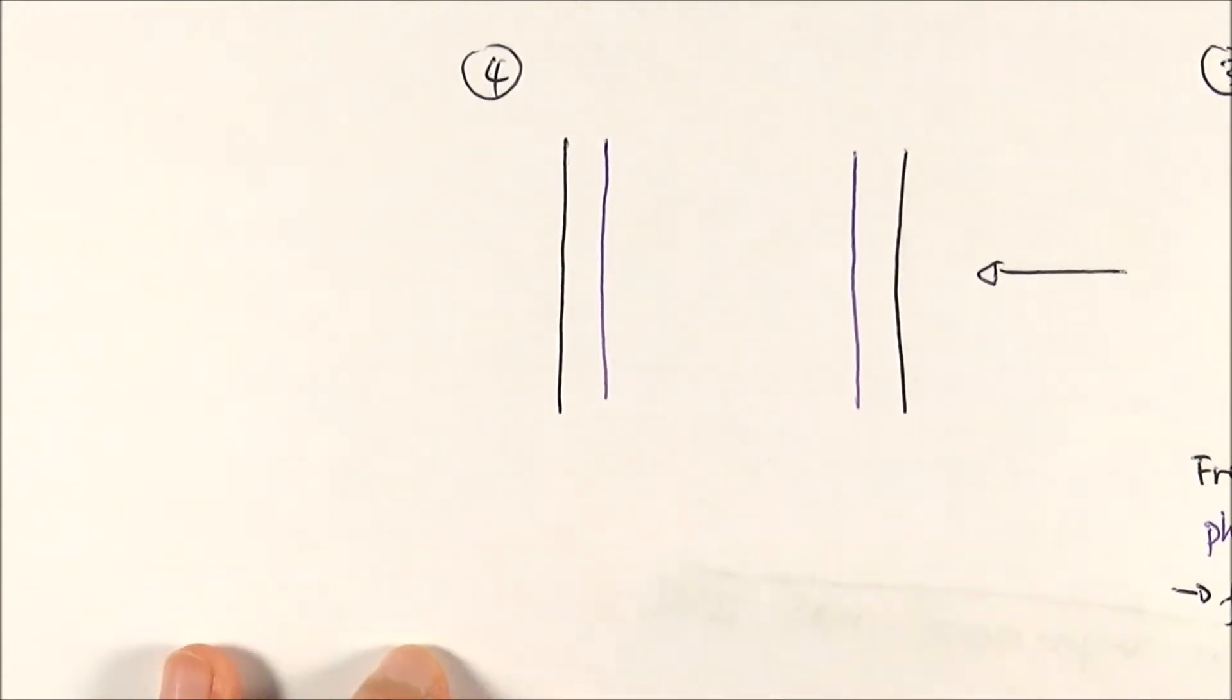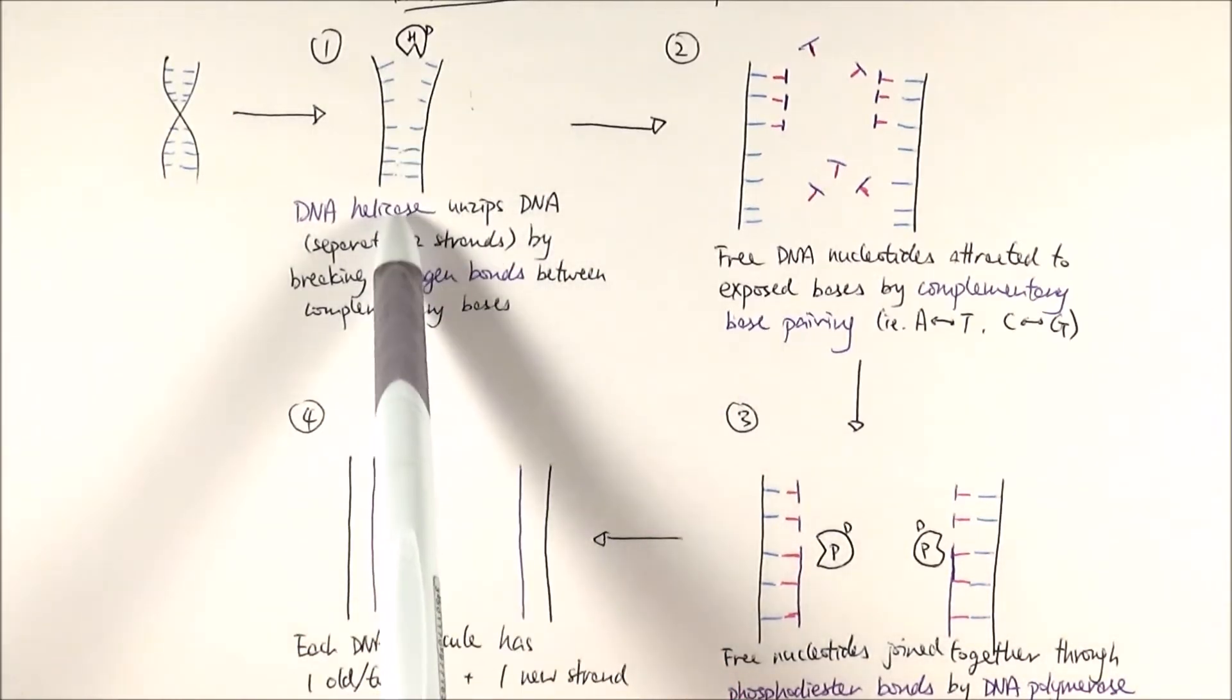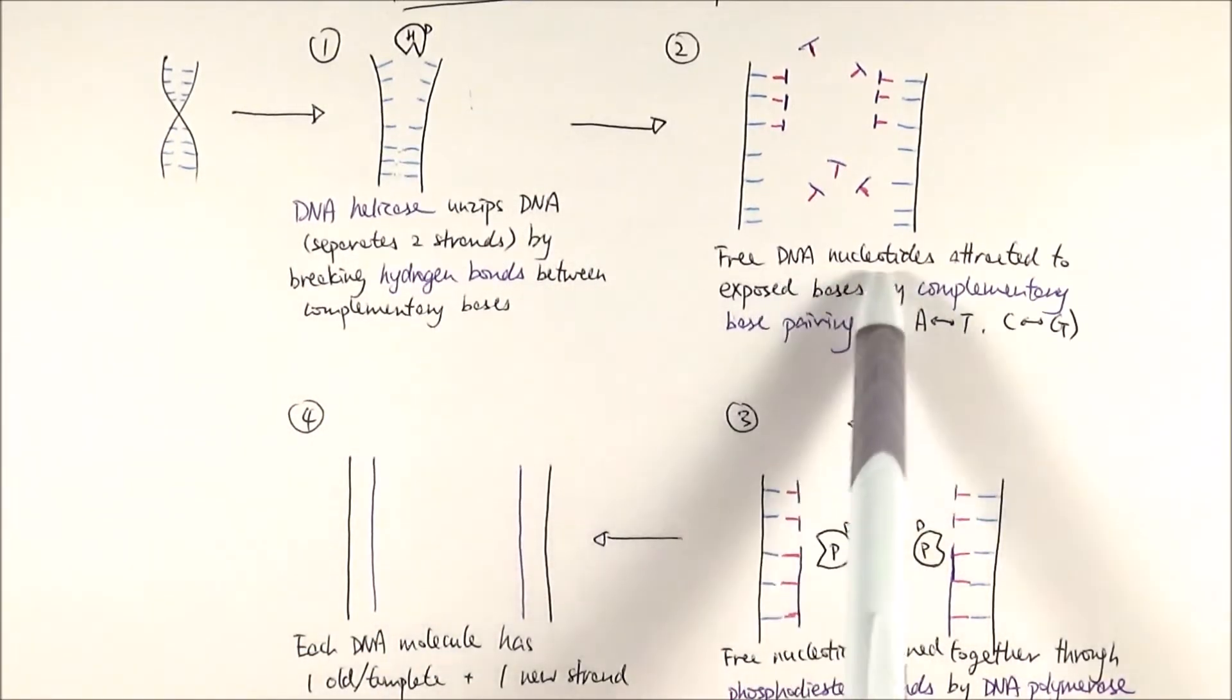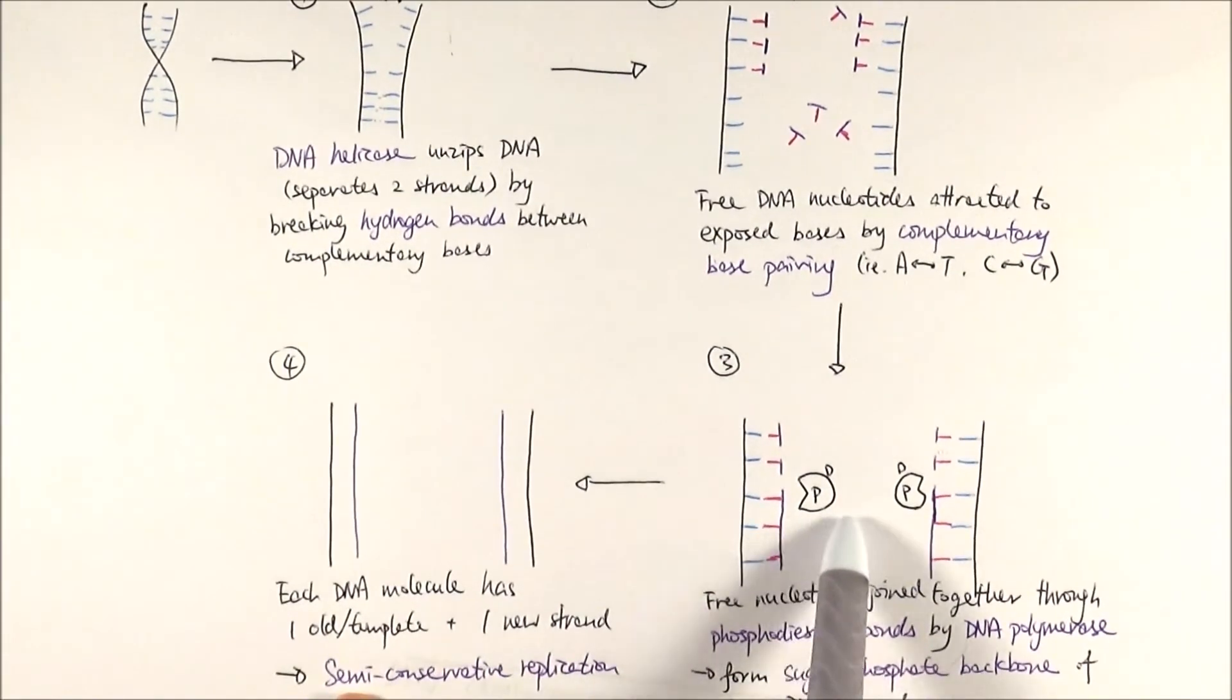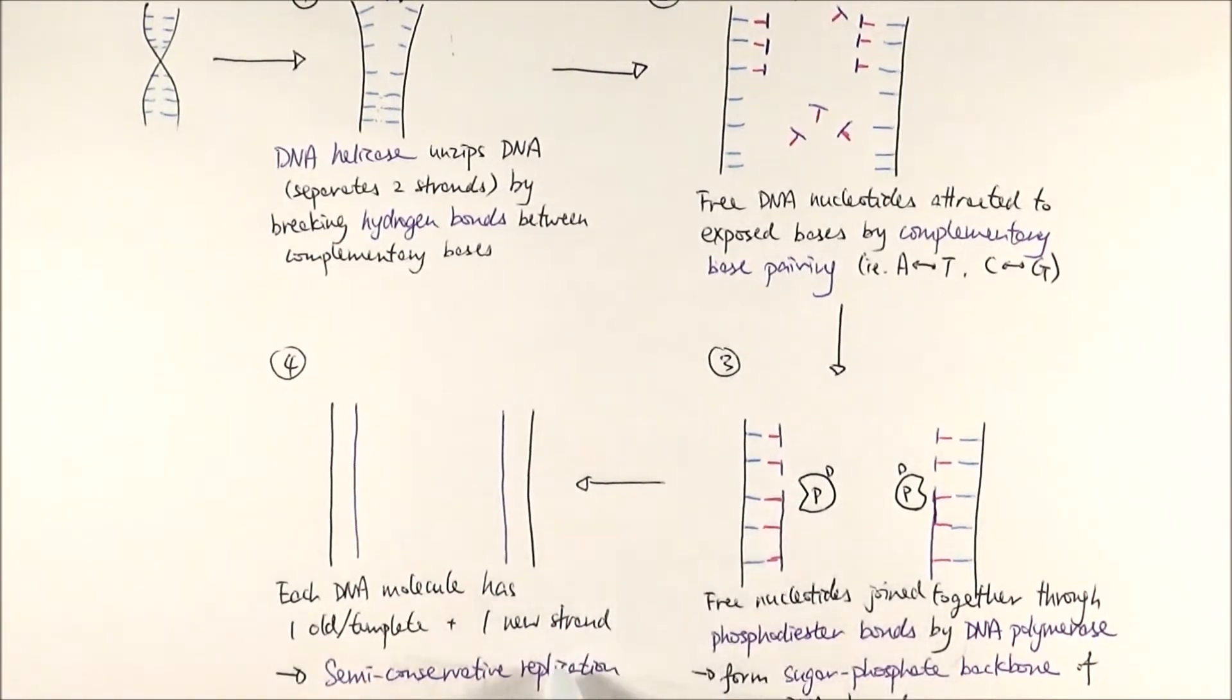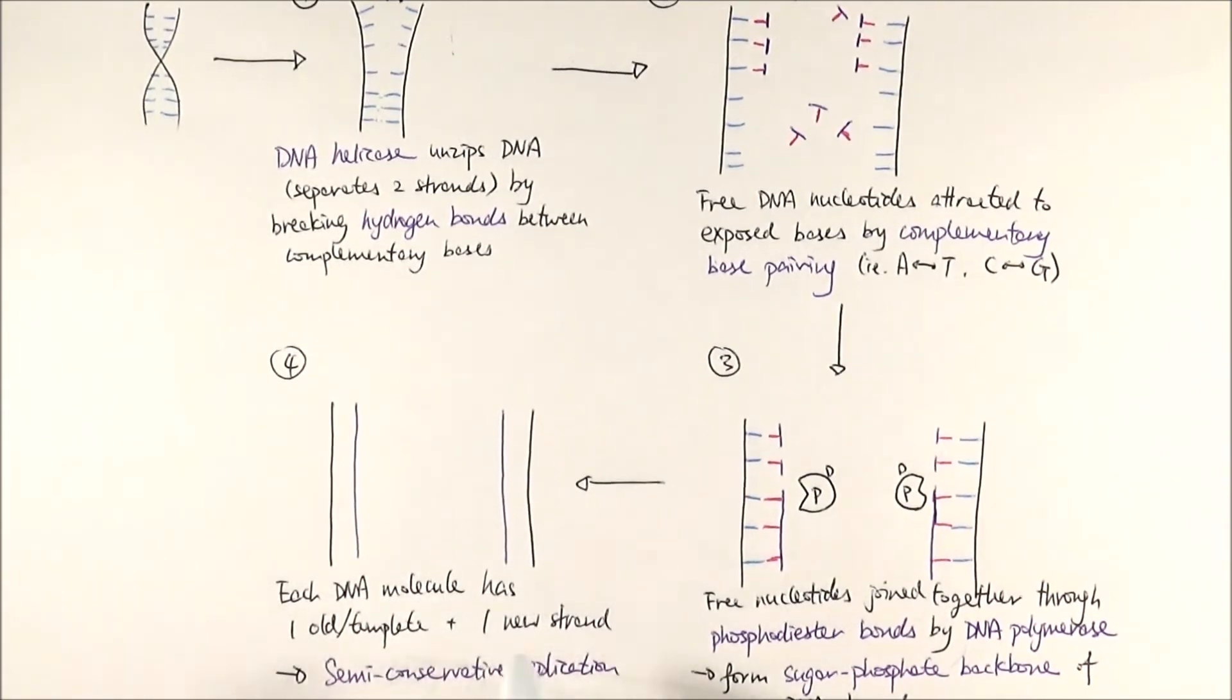Here's an overview: The DNA molecule unwinds and unzips via DNA helicase by breaking hydrogen bonds between complementary bases. Free DNA nucleotides are attracted to the exposed bases and pair up by complementary base pairing. The new nucleotides are joined together by DNA polymerase forming phosphodiester bonds to make the sugar phosphate backbone. You get two molecules, each with one new and one old strand of DNA - semi-conservative replication.